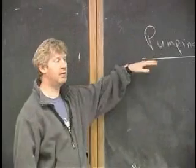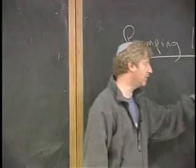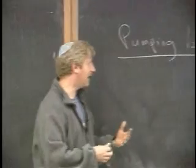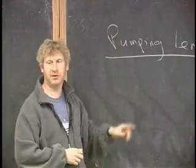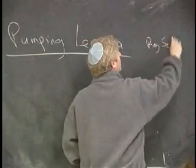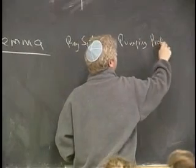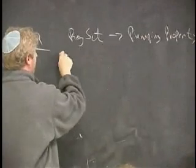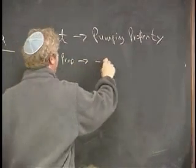So this lemma is written down in the forward way, usually. If something is a regular set, then it needs to have this property, this pumping property. But we use it backwards. We use it to show that, give me a set, I'll show you it doesn't have this pumping property, and I will therefore conclude that it can't be a regular set. So the pumping lemma is written as regular set implies pumping property. But we use it in the contrapositive way. Not pumping property implies not regular set.